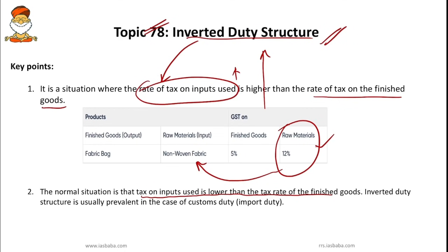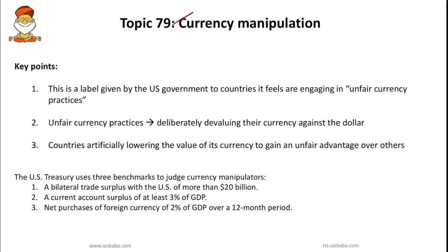The inverted duty structure causes several administrative problems especially in our GST system. Taxpayers will have accumulated credits in the form of refund claims with the tax department. The inverted duty structure is a revenue loss for the government, as the government has to refund the tax already paid. Under GST, the inverted duty structure is identified for goods and not for services — there is recognition for input goods and not for input services. The GST Council has given the statement that it will correct the inverted duty structure.